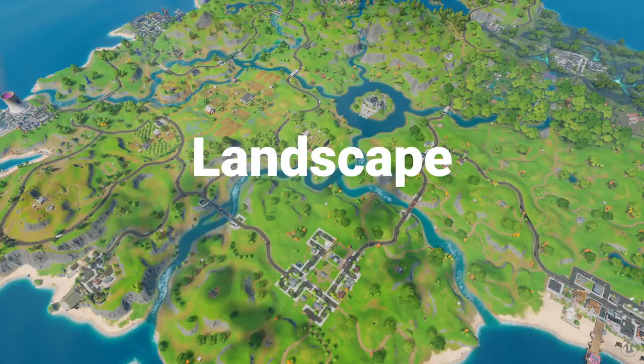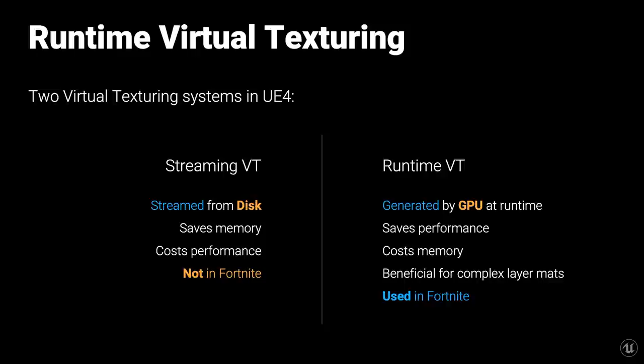Our first feature category is landscape. The first feature is runtime virtual texturing — not strictly a landscape feature, but in Fortnite we're primarily using it for landscape purposes. There are two completely different types of virtual texturing systems in Unreal Engine: streaming VT and runtime VT. The streaming VT is streamed from disk and generally saves memory at the cost of some performance, and is not currently used in Fortnite. The runtime VT is generated by the GPU at runtime, saves performance at the cost of some memory, and is generally beneficial for complex layered materials.